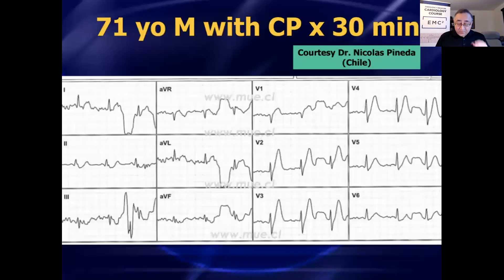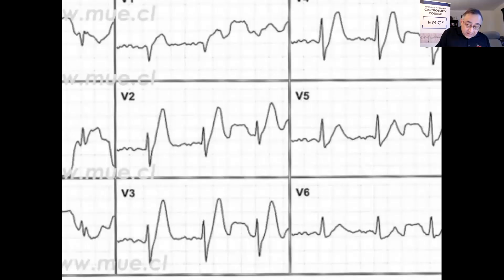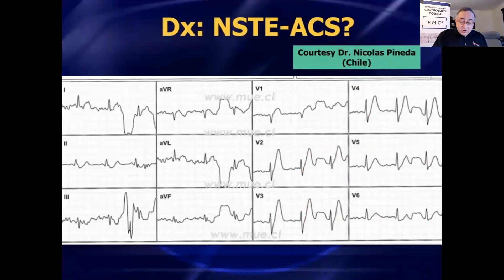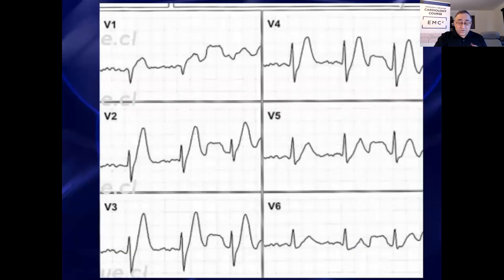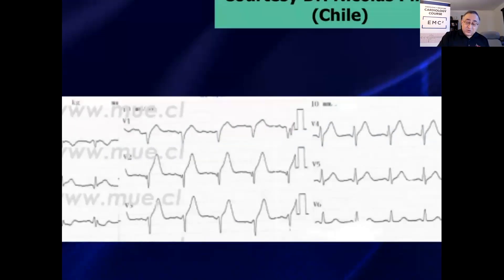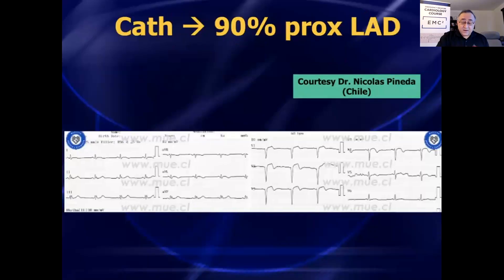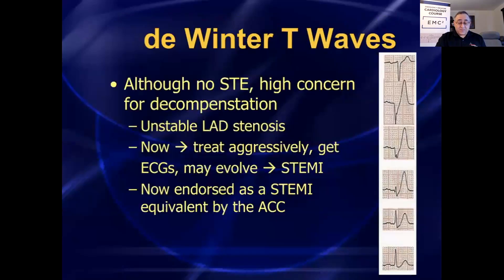Here's a case that was sent from a friend in Chile. Mid-precordial leads V2, V3, V4 — you can see there's ST depression shooting into a big, tall, symmetric T wave. There's the J point right there. This patient — they didn't recognize that this was the de Winter pattern initially, as this was a number of years ago. The natural progression over the next several hours: it turned into an anterior wall STEMI. That was, again, predictable — 90% proximal LAD.